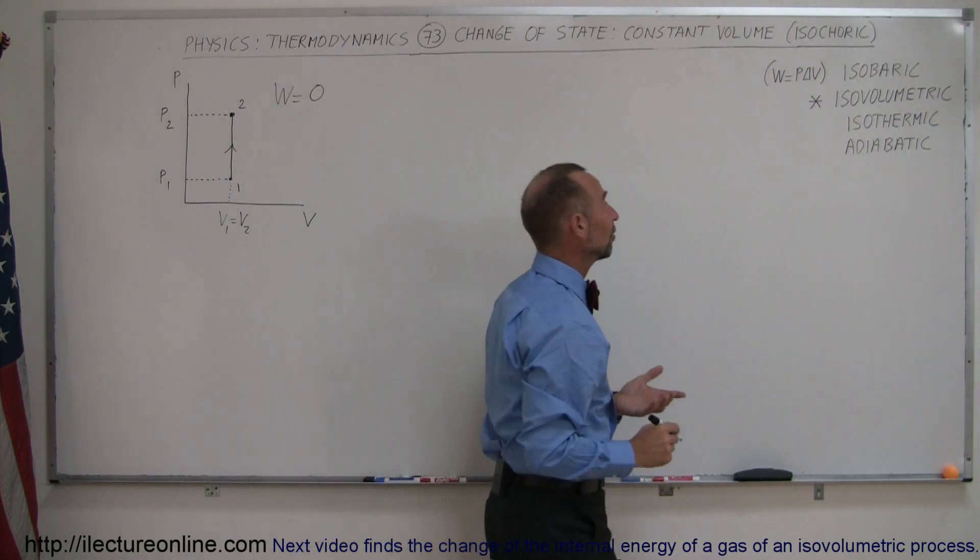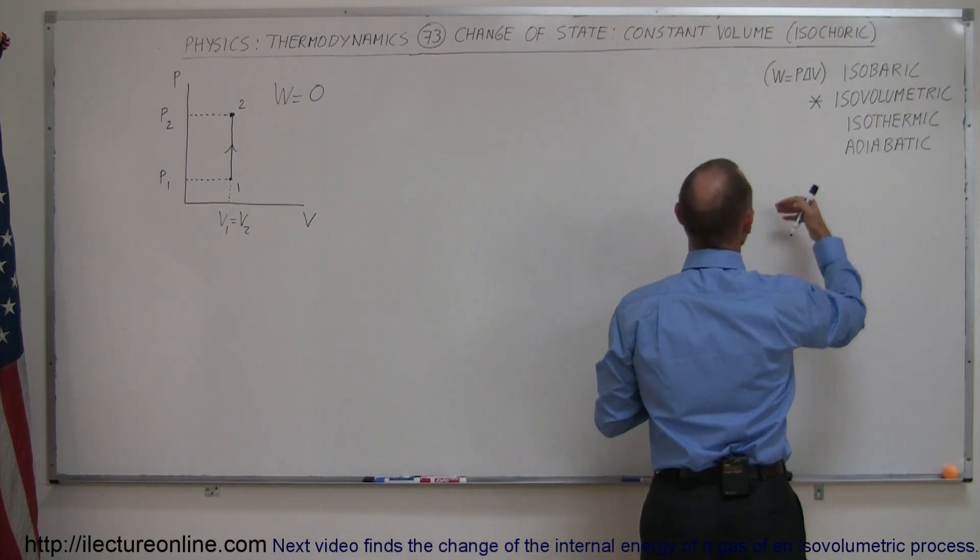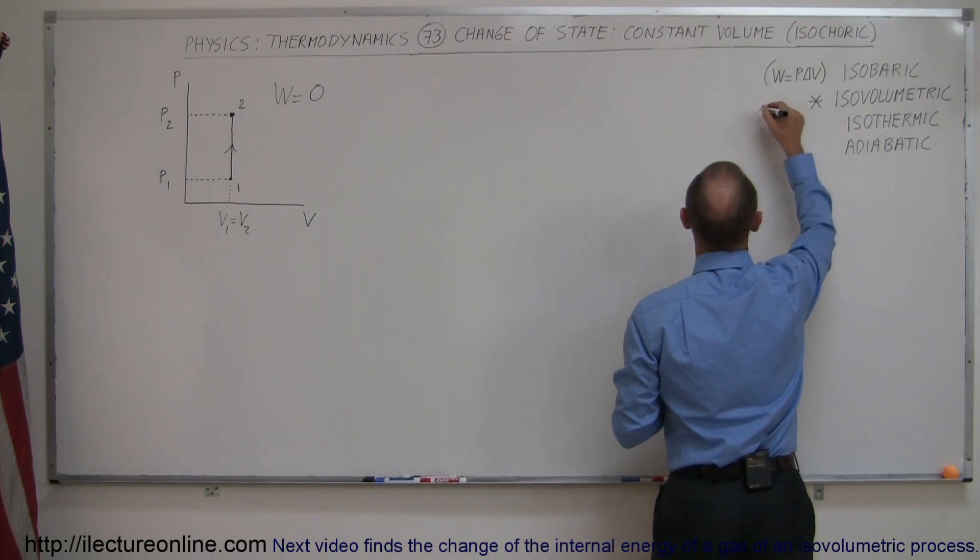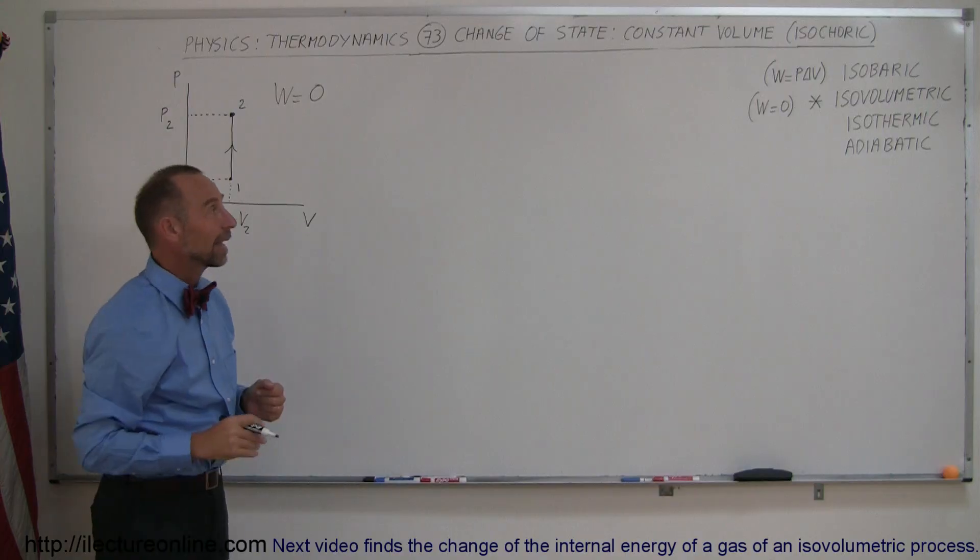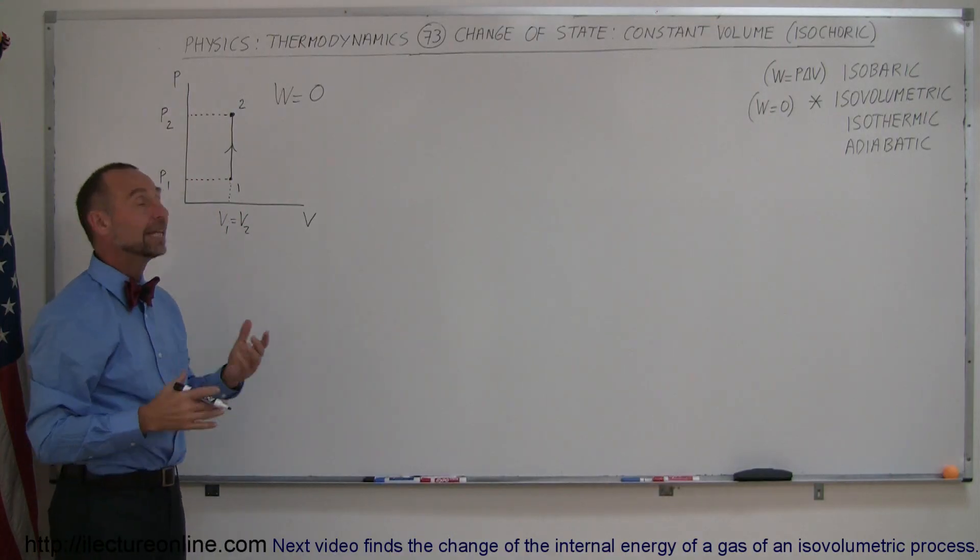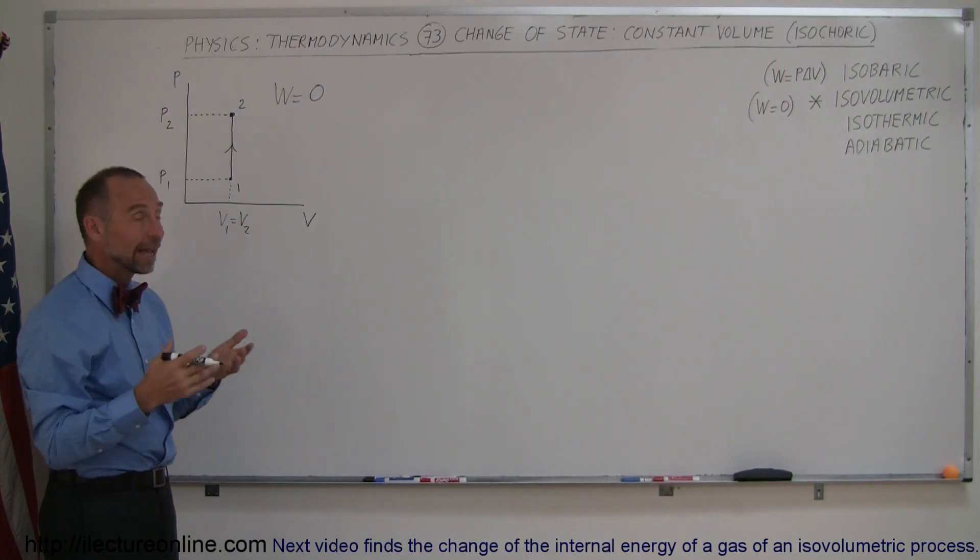And that's the identifying characteristic of an isovolumetric process or an isochoric process, where the work done is equal to 0. That simplifies things when we start calculating the various states of the gas and how much heat is exchanged and how the internal energy of the gas changes.